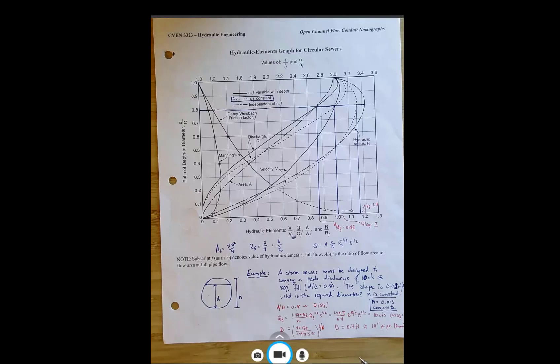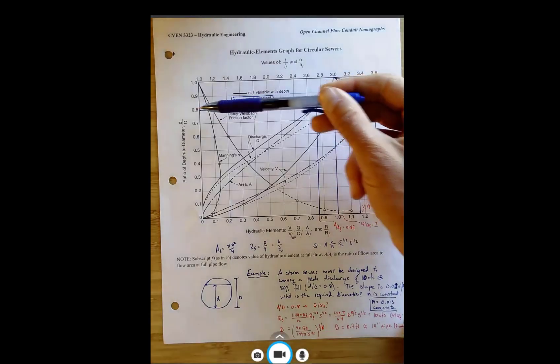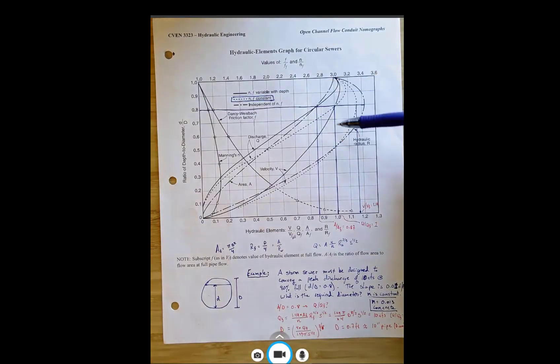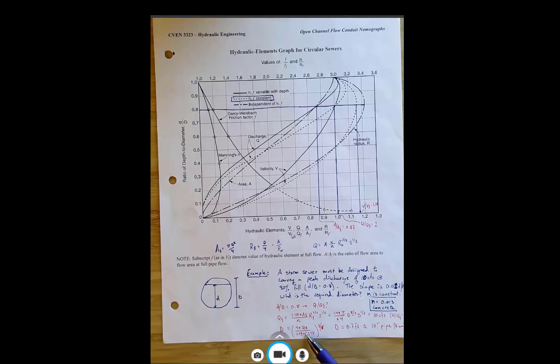So we did a bunch of algebra to start at d over D equals 0.8. We found that our Q over QF is equal to 1. And so we can use the Manning's equation in terms of D because D is our unknown and D comes in our area term and our hydraulic radius term. We can solve for D and then plug in all the knowns that we have.